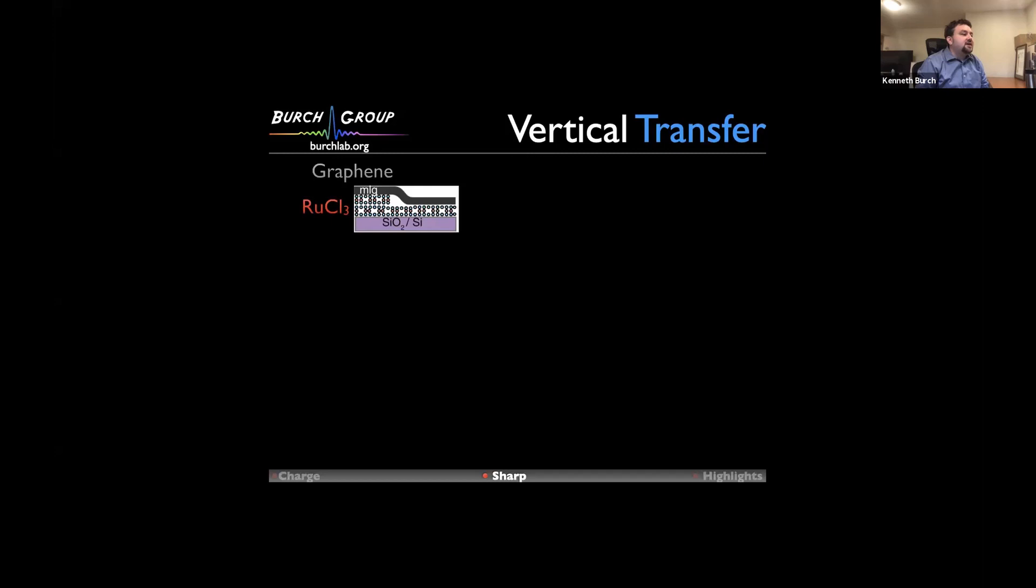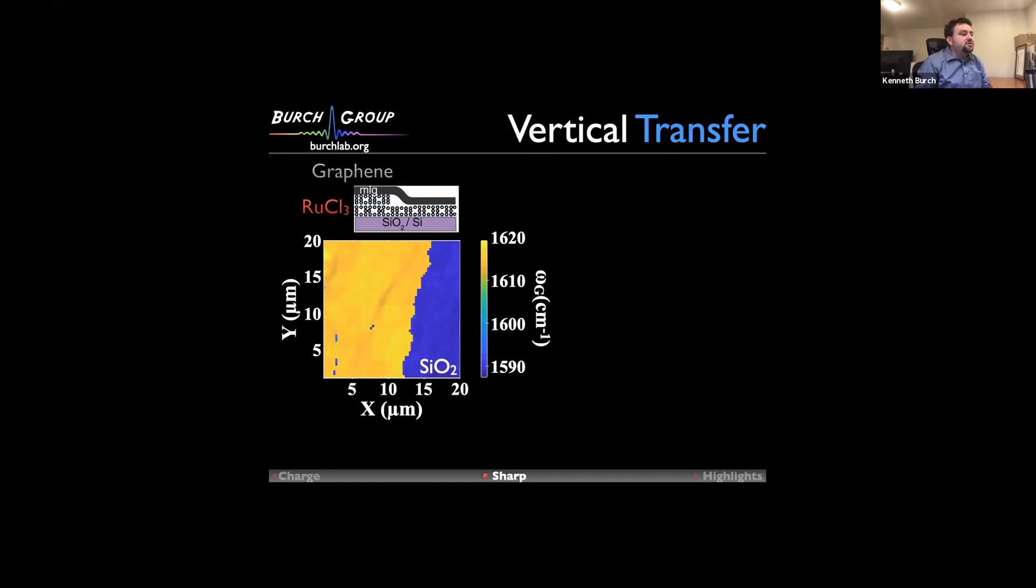All of the structures we're measuring are done without having to do any fabrication. The question is, how clean and sharp are these? Here is that structure I mentioned to you earlier, where we placed graphene on top of ruthenium chloride and also SiO2. But here we intentionally placed the graphene on both a single layer and bilayer of ruthenium chloride with the question, how much ruthenium chloride do you need to get the effect? Here is the G-peak map. The first thing you notice is that you can actually see the border between SiO2 and where the ruthenium chloride is in the map. It looks very sharp. However, you can't obviously tell where the two layer and one layer of ruthenium chloride is.